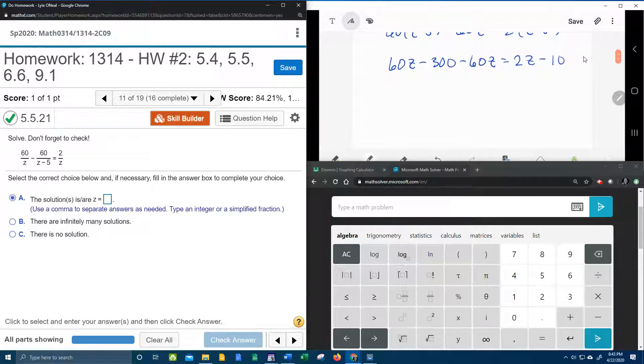And then combine like terms, 60z minus 60z, those are going to cancel. I'm going to go ahead and bring the negative 10 over so that it can get with the 300. That's going to give me negative 300, that's going to become plus 10 equals 2z. Negative 300 plus 10, that's a negative 290.